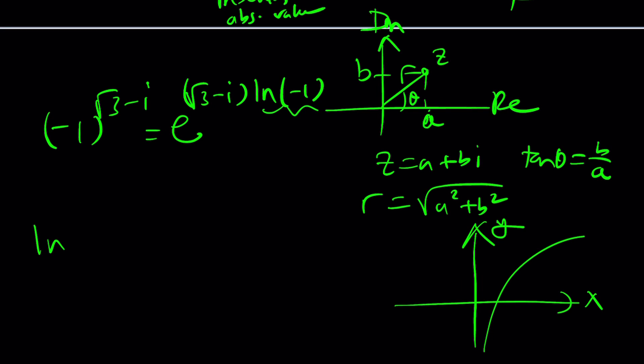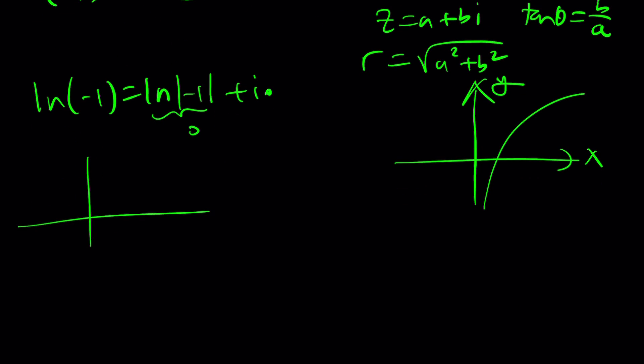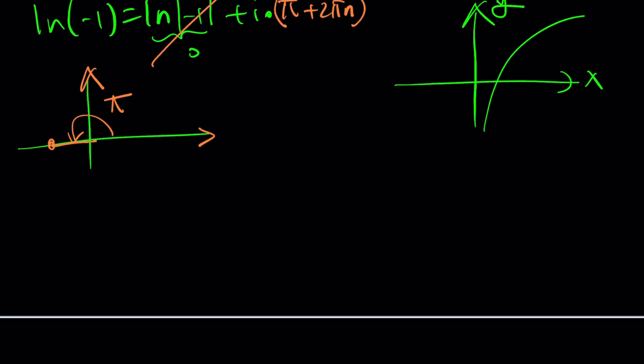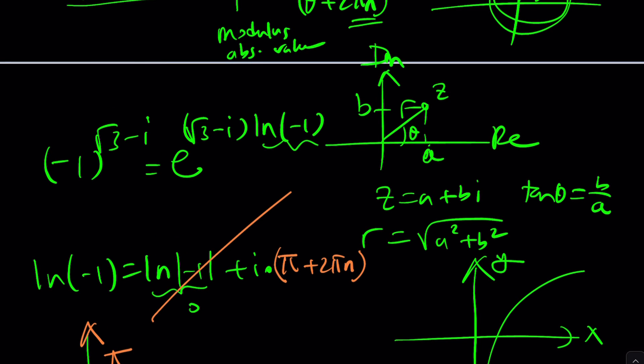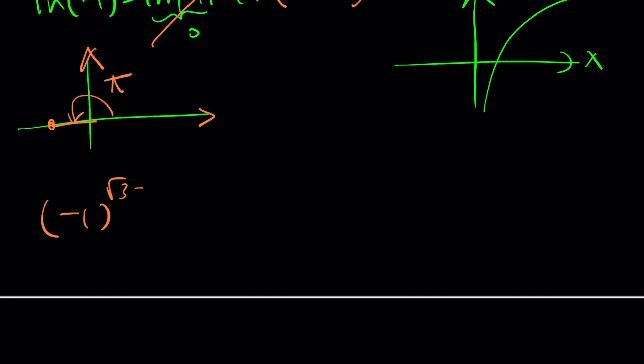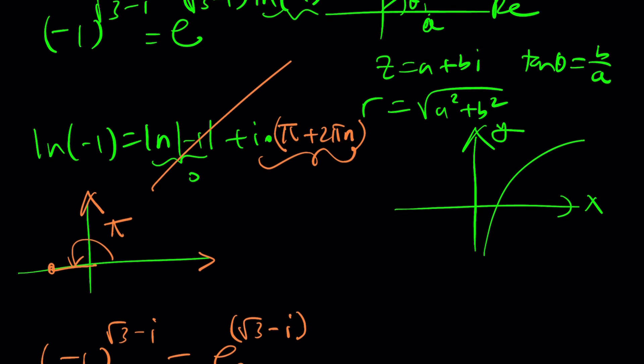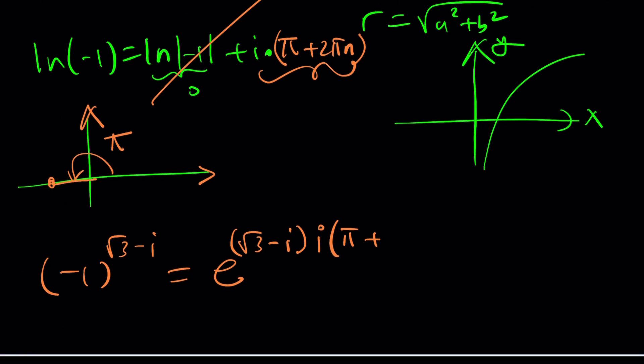So to be able to find the ln of negative one we're going to have to consider ln of the absolute value of negative one which is one, ln one is zero, plus i times theta. What is theta if our number is negative one? Well negative one is a real number so it'll make an angle of pi radians, so its angle is pi but we're allowed to add 2 pi n to write the whole thing in the most general form. So ln negative one is given by i times pi plus 2 pi n. But that's not the whole story because negative one to the power root three minus i equals e to the power root three minus i multiply by i times pi plus 2 pi n.